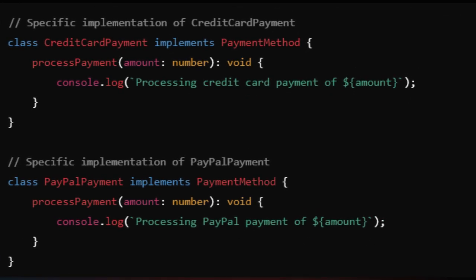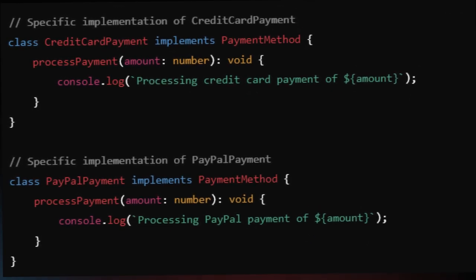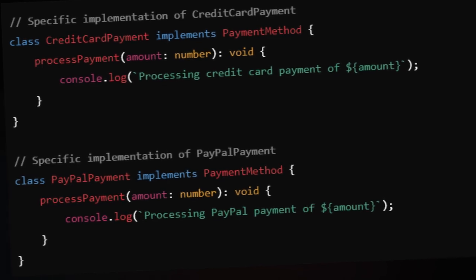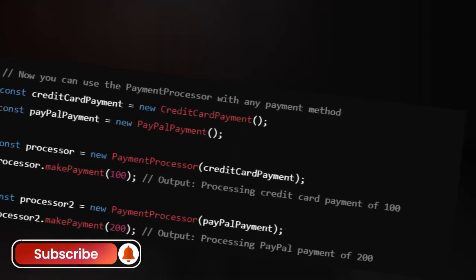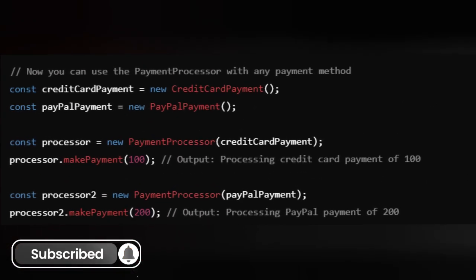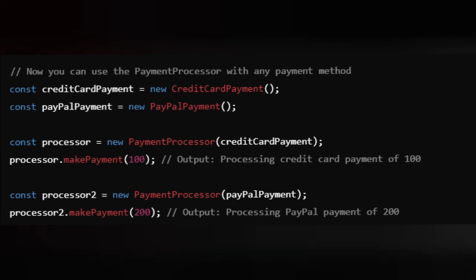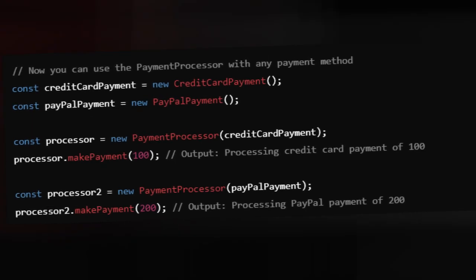The abstraction acts like a middle layer, allowing the main system to work with any payment method. This makes the system more flexible and less dependent on specific details, so it's easier to add or change features without breaking anything.